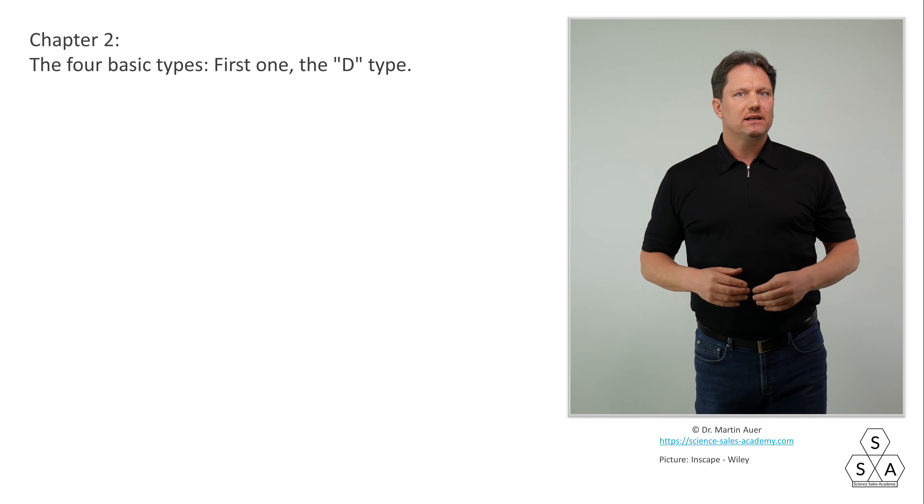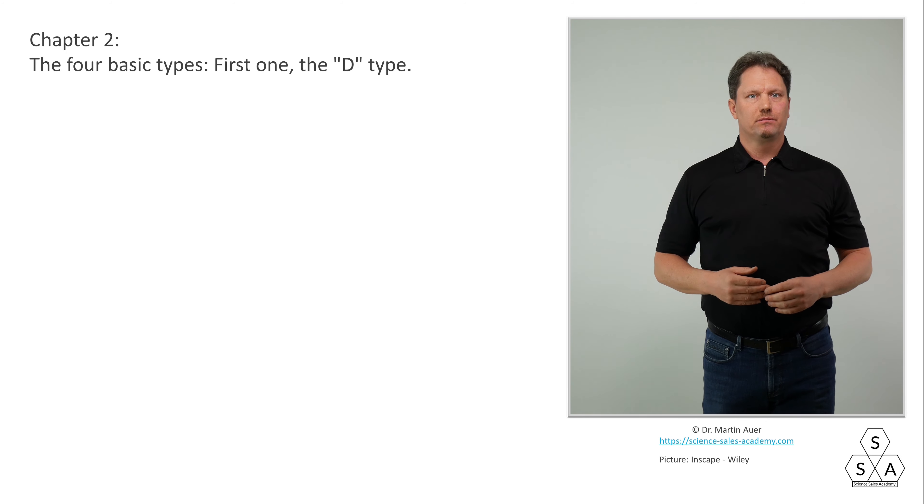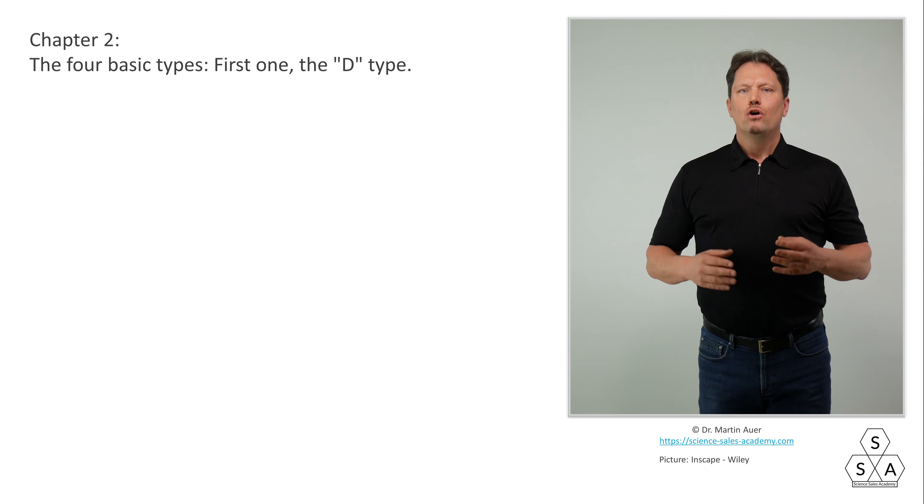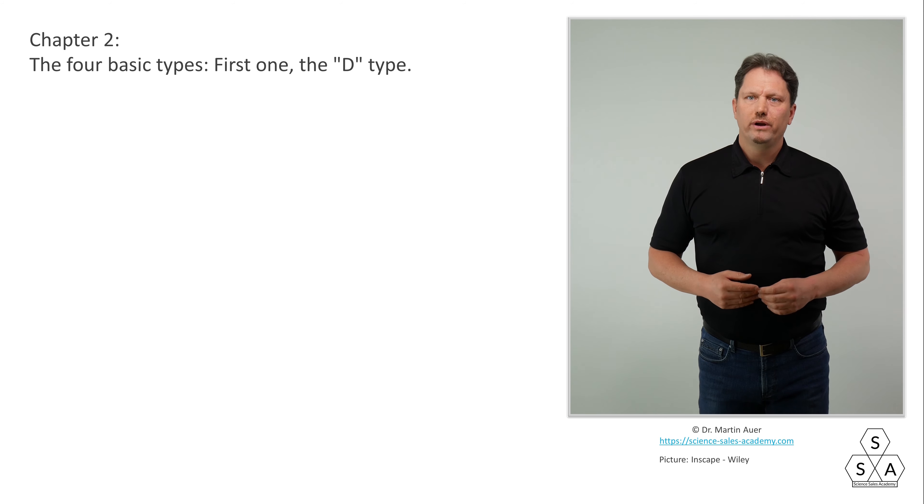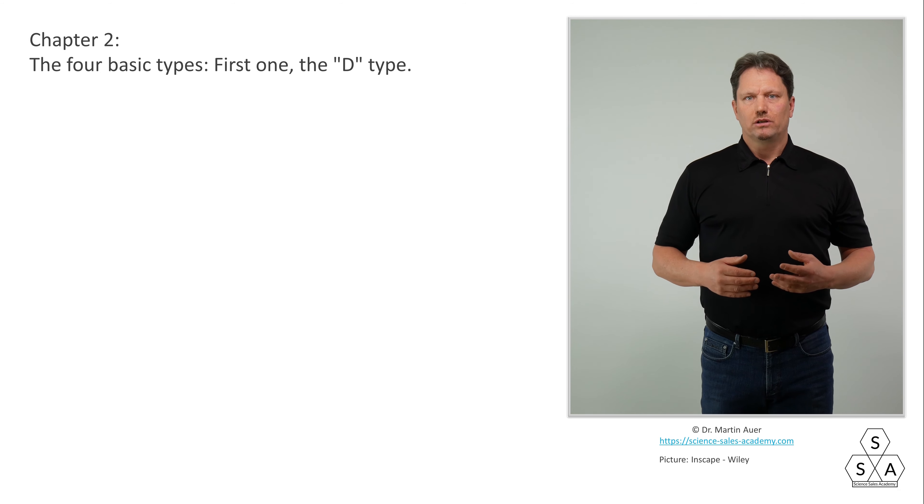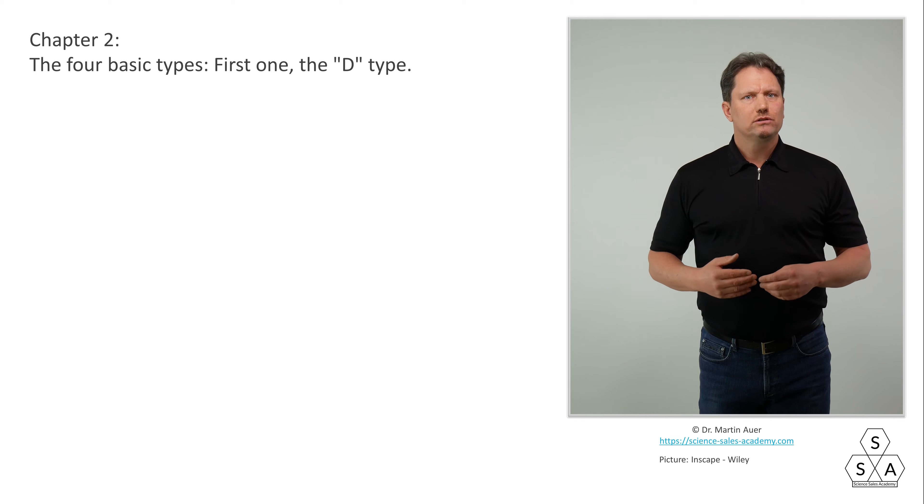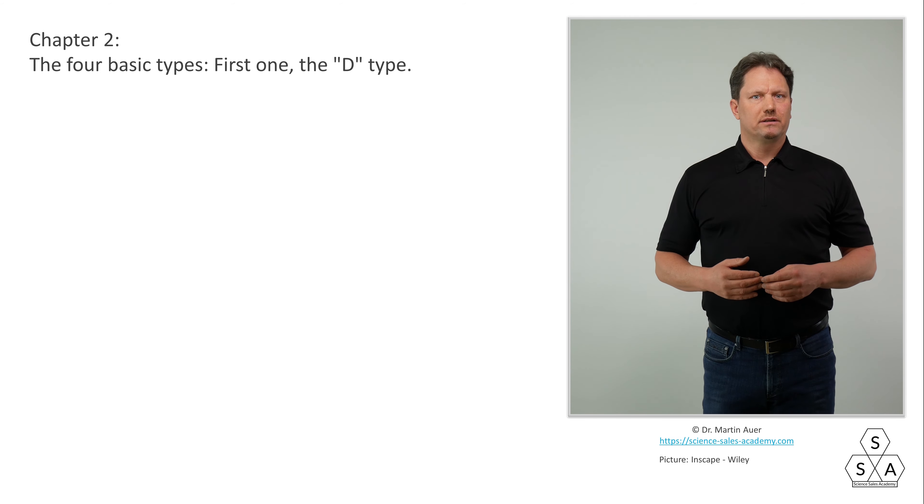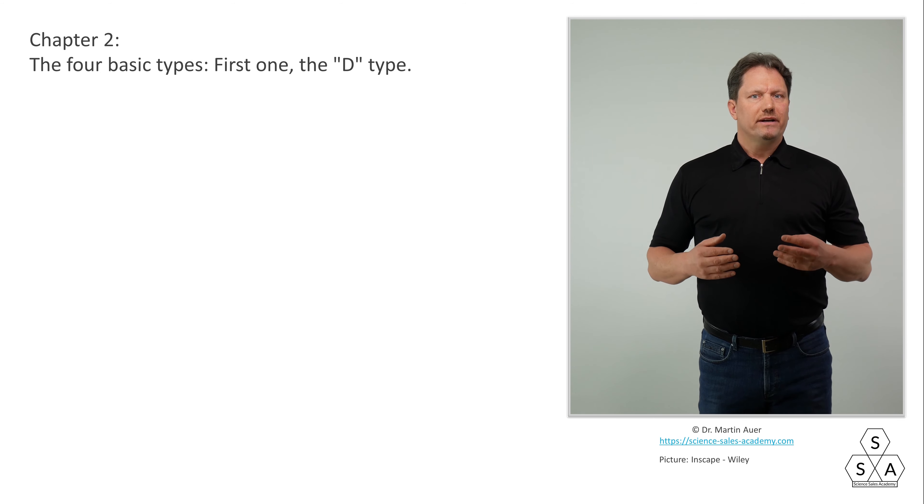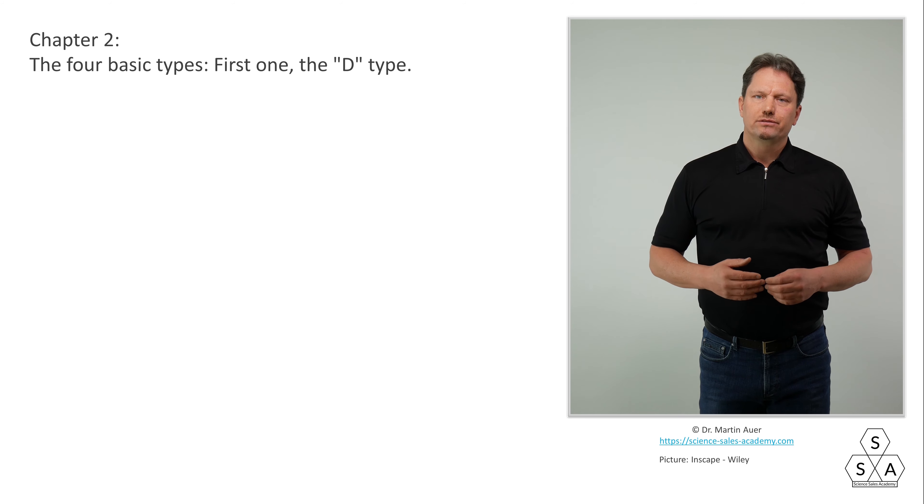Chapter 2: How does the Wiley DISC model work? The four basic types. The first one, the D-type, the dominant type. Let us now develop the DISC model step by step. First, I would like to briefly explain the basis. For some this may be a repetition, but it only takes a few minutes. We are going to dig deeper than the short introductory videos that one or the other may have seen before.